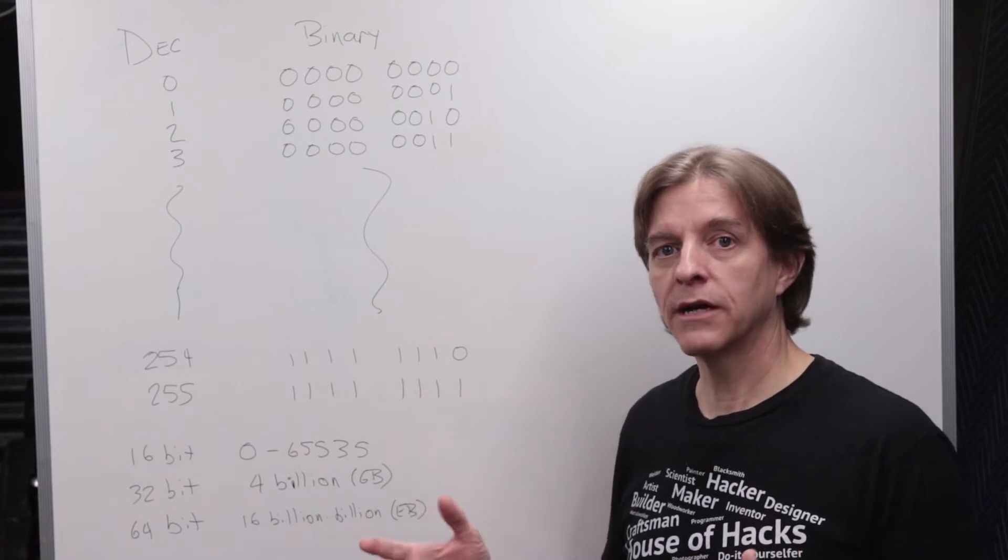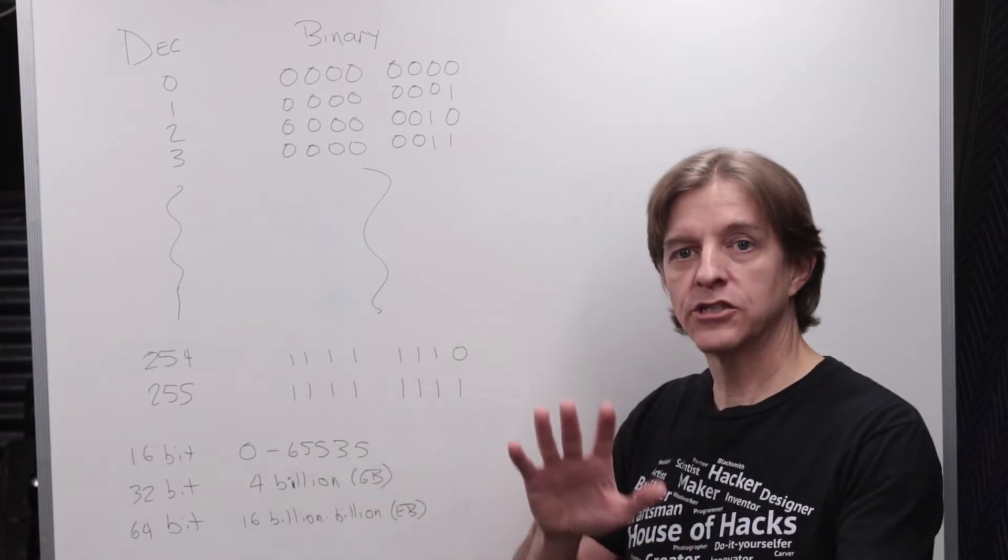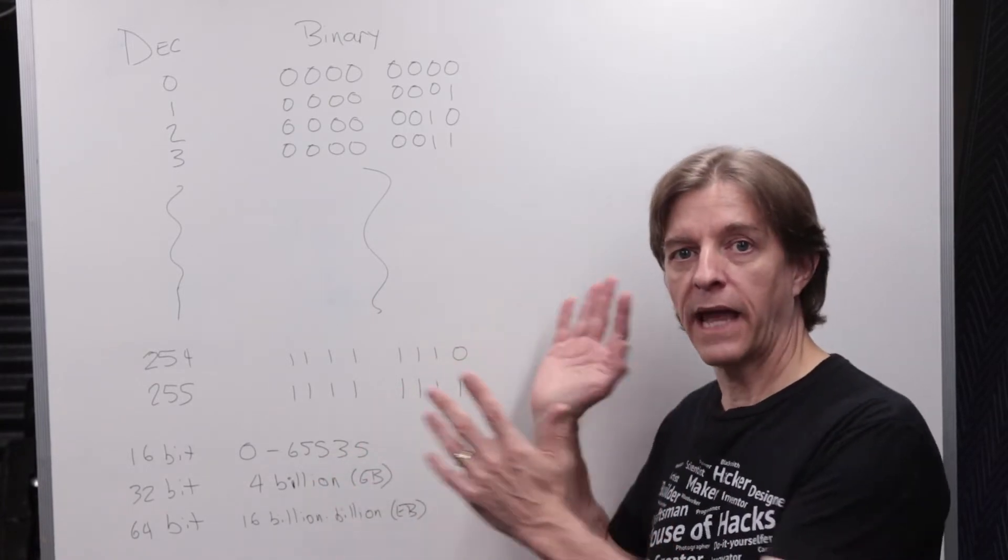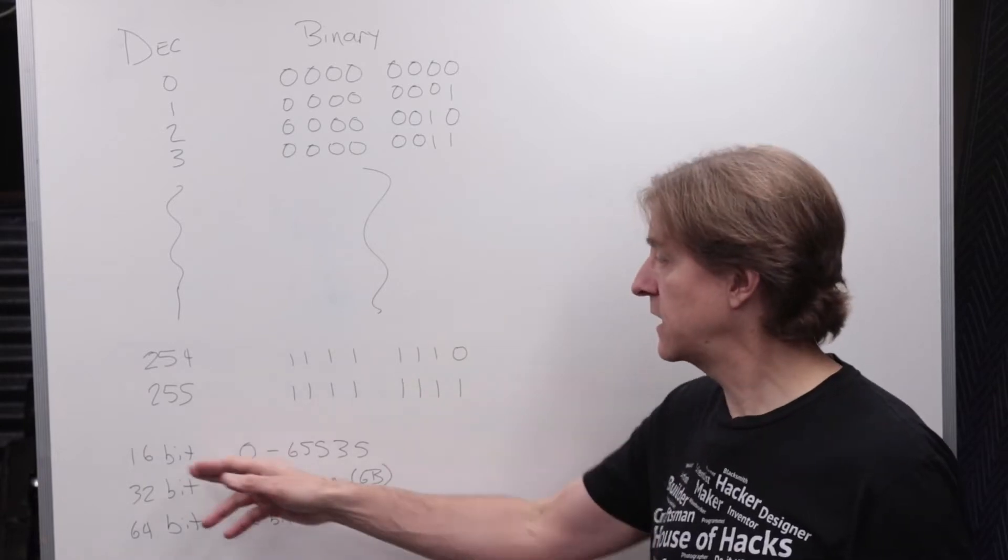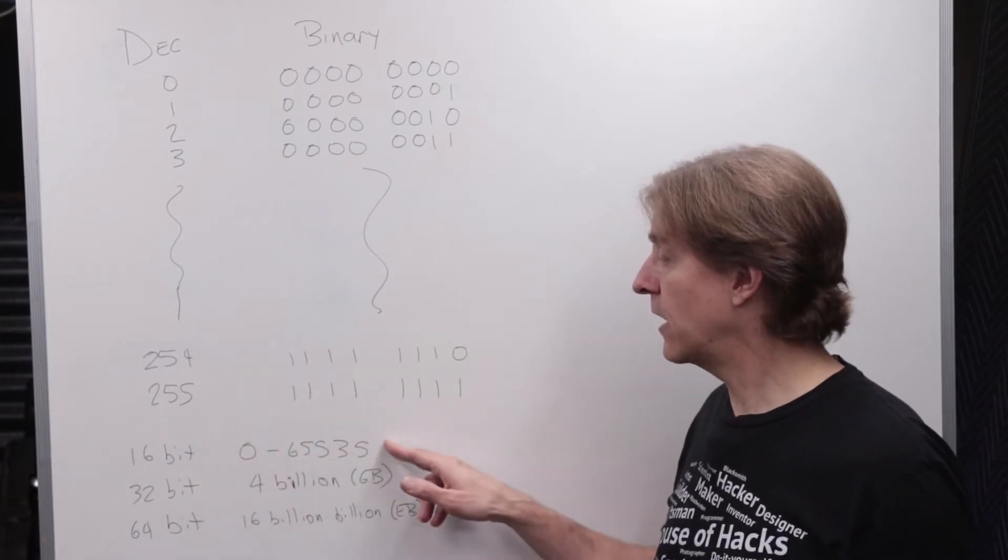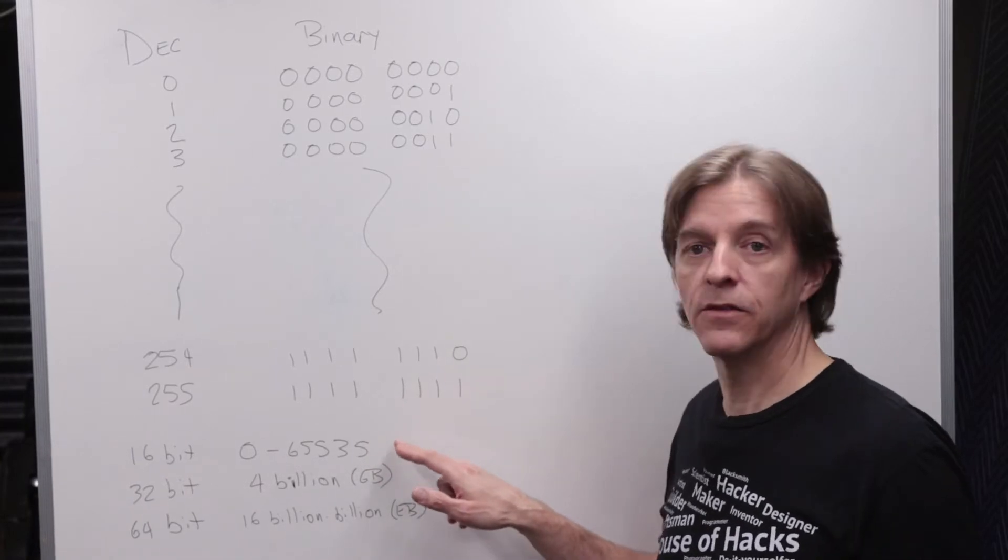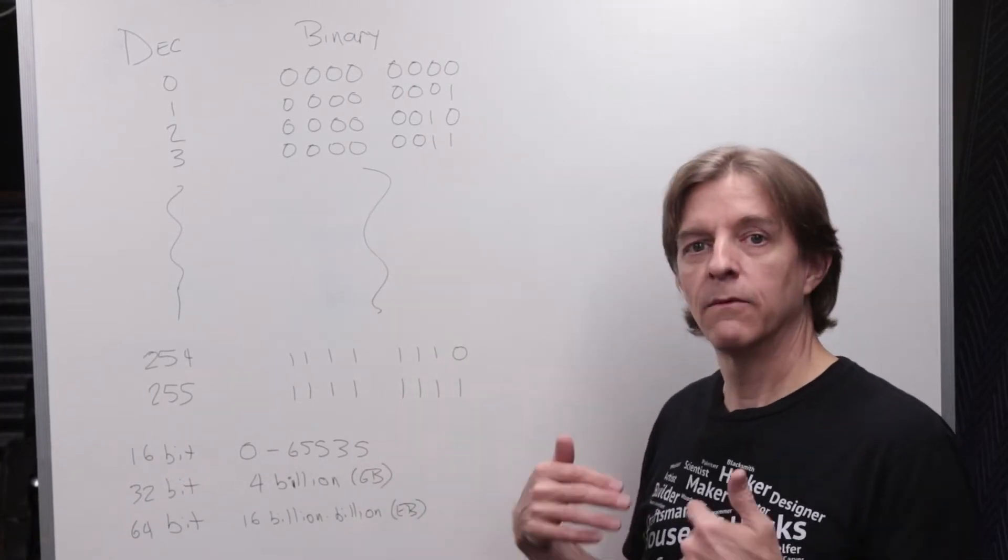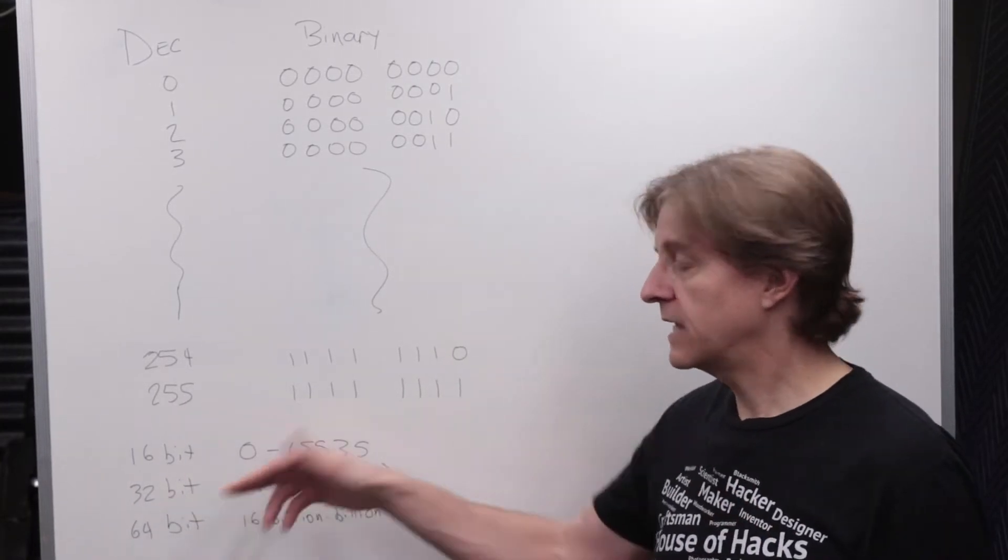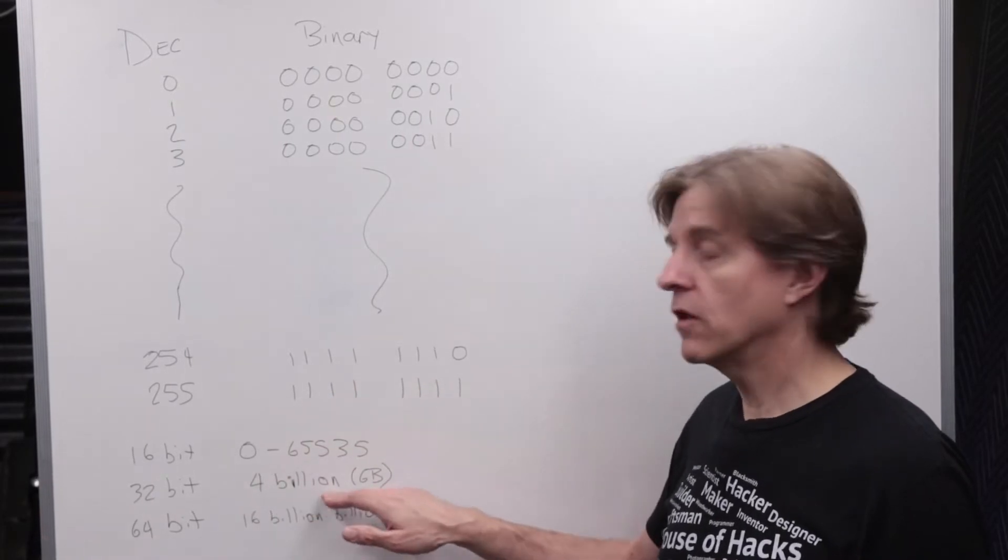As computers got newer and more bits were added, each time they doubled the number of bits from 8 in the old computers to 16 on some newer ones, and they can count all the way up to 65,535. Adding more bits to 32-bit, again doubling, it can count all the way to 4 billion.